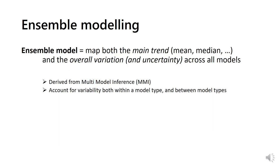An ensemble model is derived from the multi-model inference, which relies on multiple candidates with no variable selection and weight each model based on an information criteria. Initially, it was developed as an alternative to stepwise procedure. Unlike multi-model inference, ensemble modeling is not based on likelihood, but rather on metrics of predictive performance such as AUC or TSS. It allows to map both the main trend across all models, as well as the overall variation within a model type and between model types.